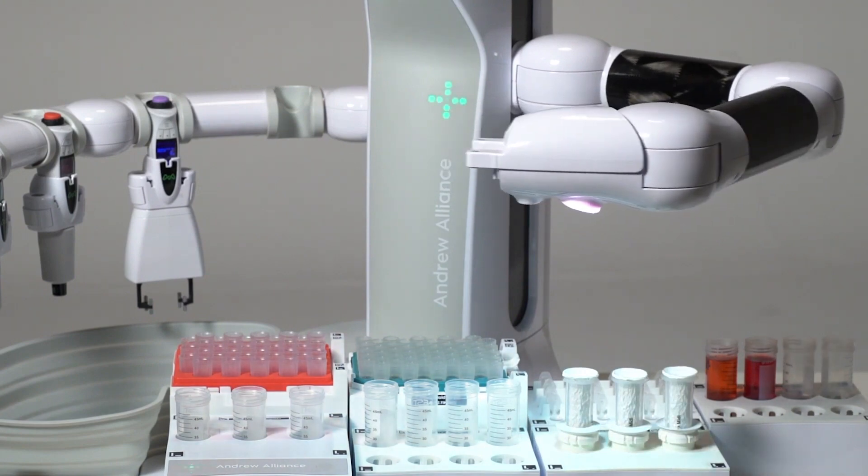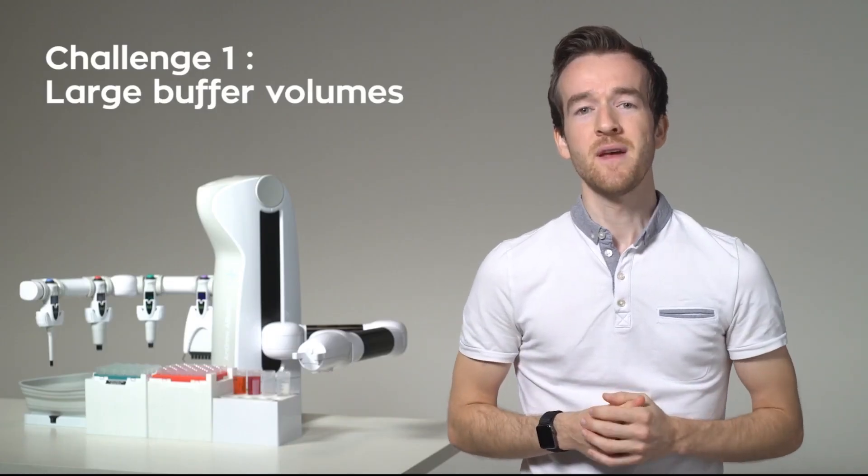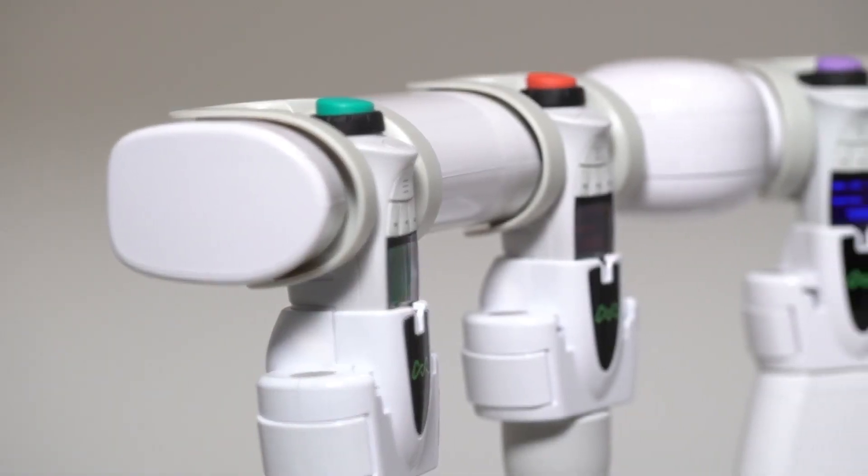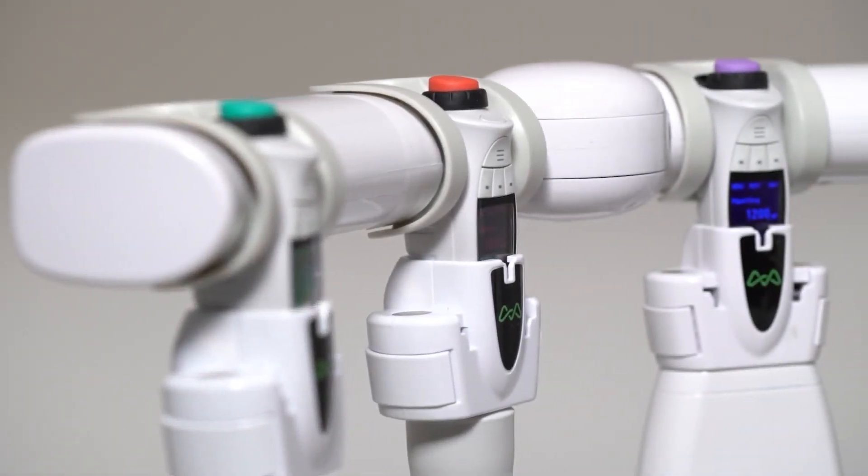But with all that said, how does the robot solve the four challenges of automating the Nucleobond extra midi prep? It starts with the pipettes. The Andrew Plus robot uses high-performance Bluetooth electronic pipettes, enabling a wide range of buffer volumes to be pipetted, up to those 10 ml.